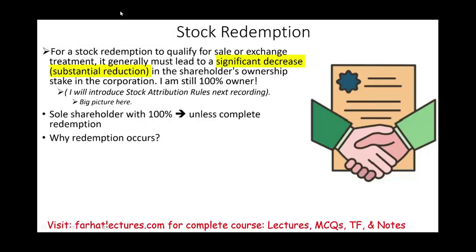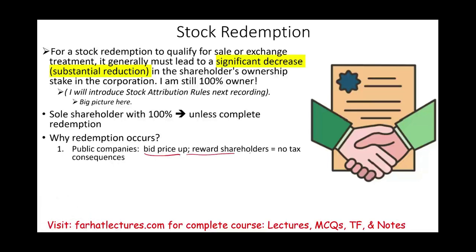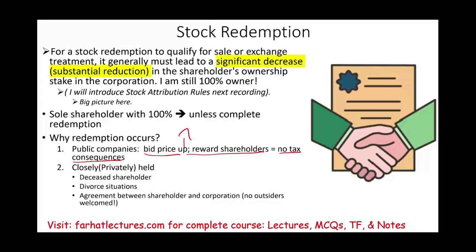For public companies, they want to bid the price up — create more demand — and reward the shareholder. When the price goes up, there are no tax consequences to the shareholder. For closely held private companies, sometimes they buy the stock back when the shareholder passes away, or there's a divorce situation where husband and wife own the same company. There can also be an agreement between shareholders — for example, if one of five shareholders leaves, they cannot sell to an outsider and must sell it back to the company.